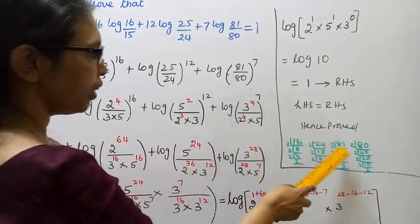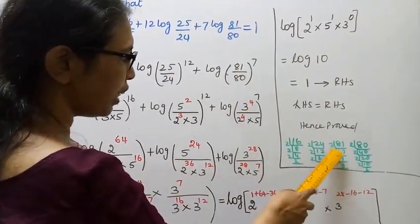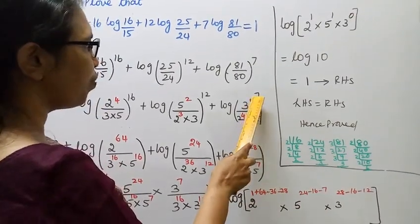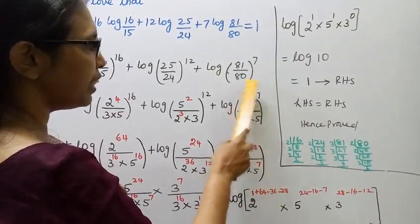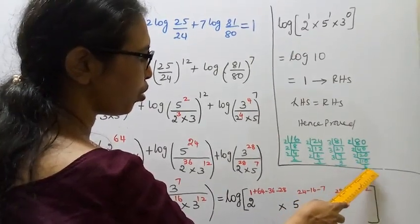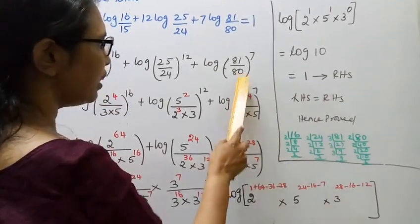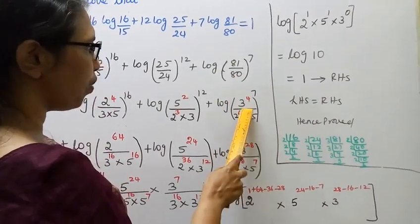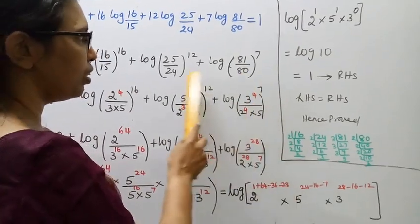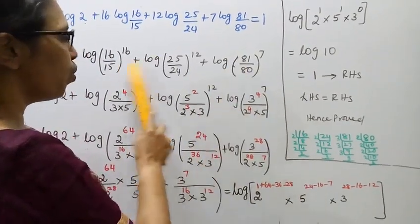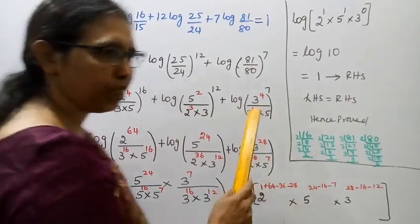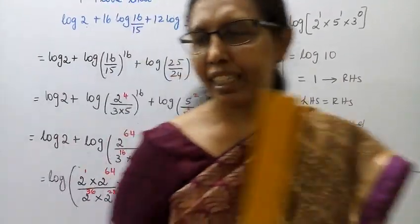Plus log 81: 81 is 3 into 3 into 3 into 3, which is 3 power 4. 80 is 2 into 2 into 2 into 2 into 5, which is 2 power 4 into 5. So (81/80) = (3 power 4) / (2 power 4 into 5), the whole power 7. Now each number has its own prime factorization.